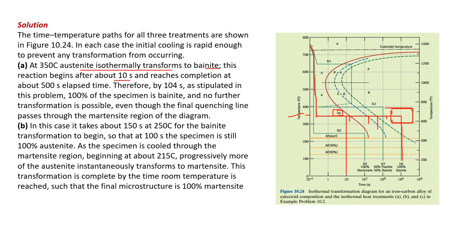For Part B, when we rapidly cool to 250°C and hold for 100 seconds then quench to room temperature: first locate 250°C on the diagram, which is in the martensite region. Draw a horizontal line at 250°C held for 100 seconds. It takes about 150 seconds for any bainite transformation to begin at 250°C, so 100% of the specimen remains austenite until it is cooled through the martensite region beginning at about 250°C.